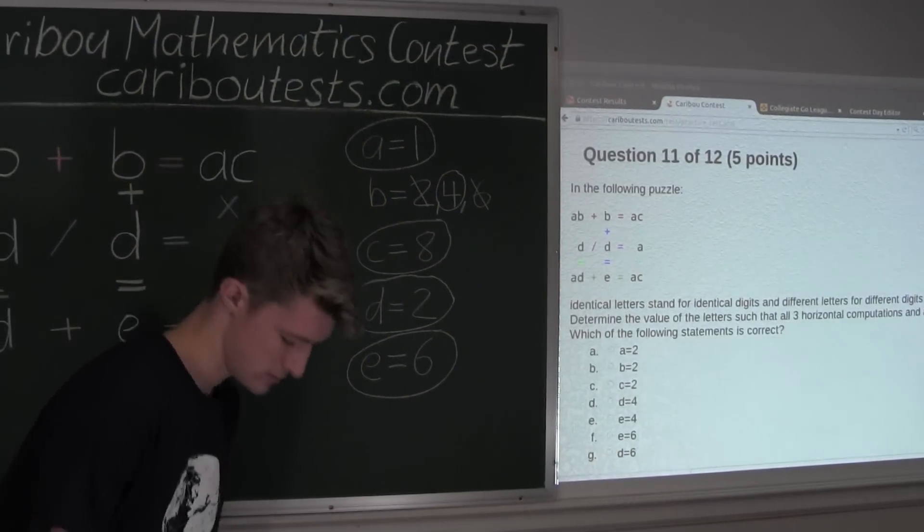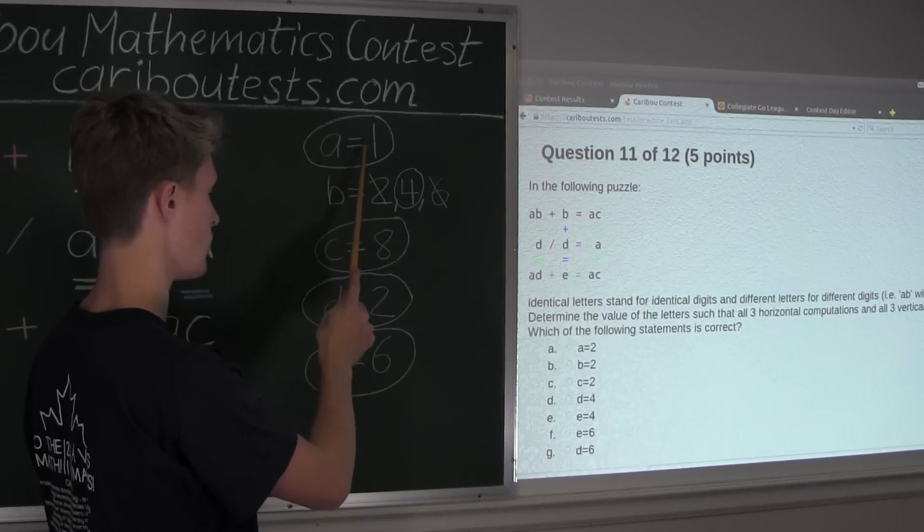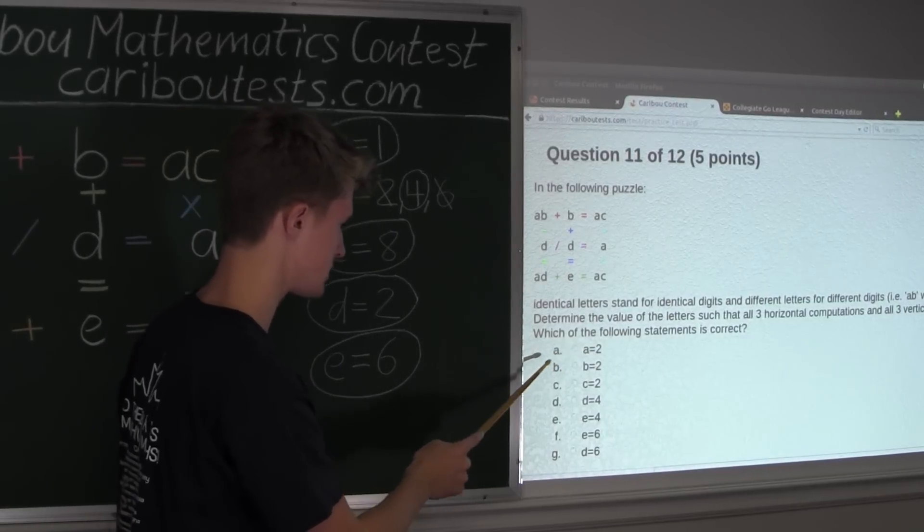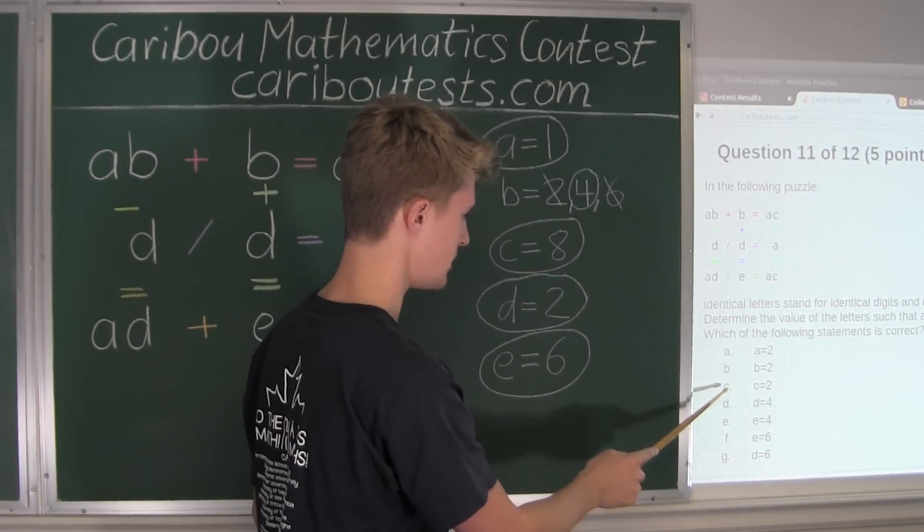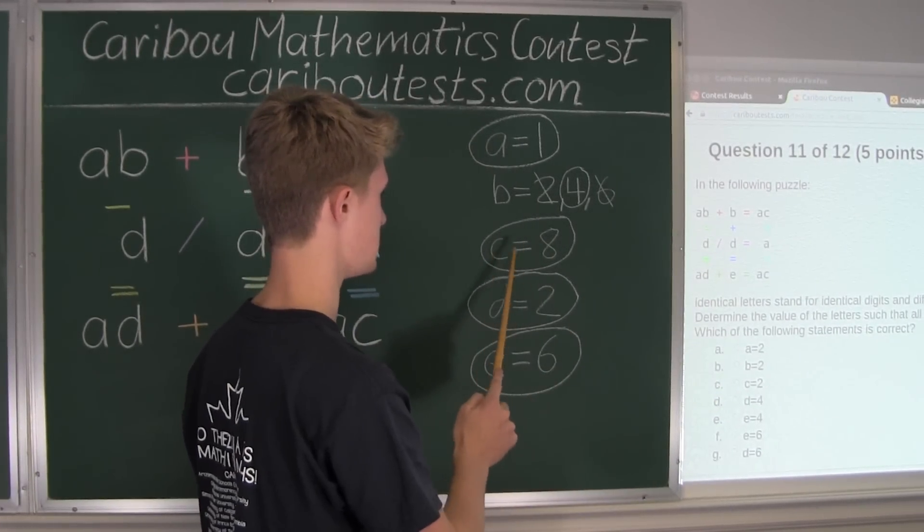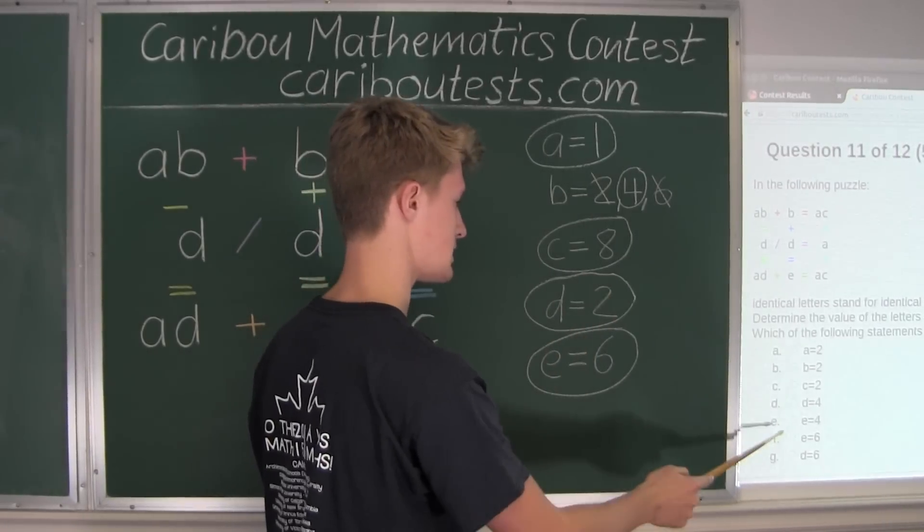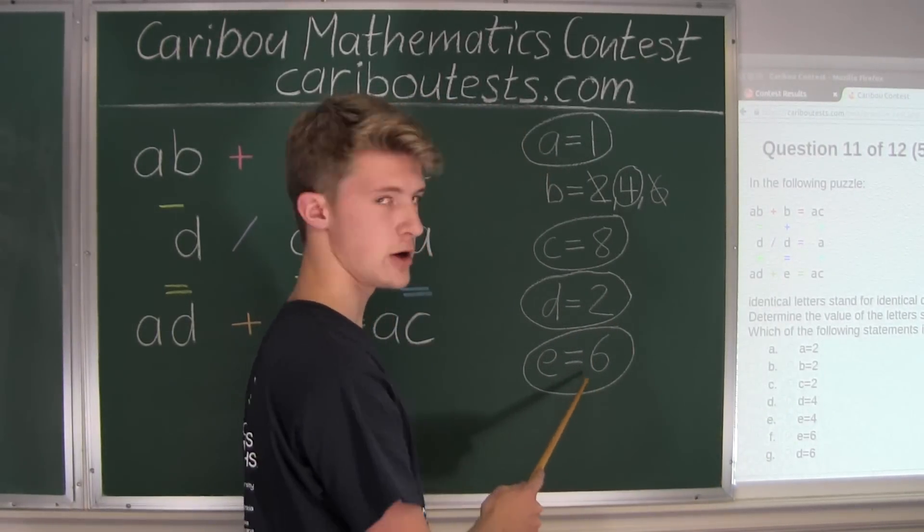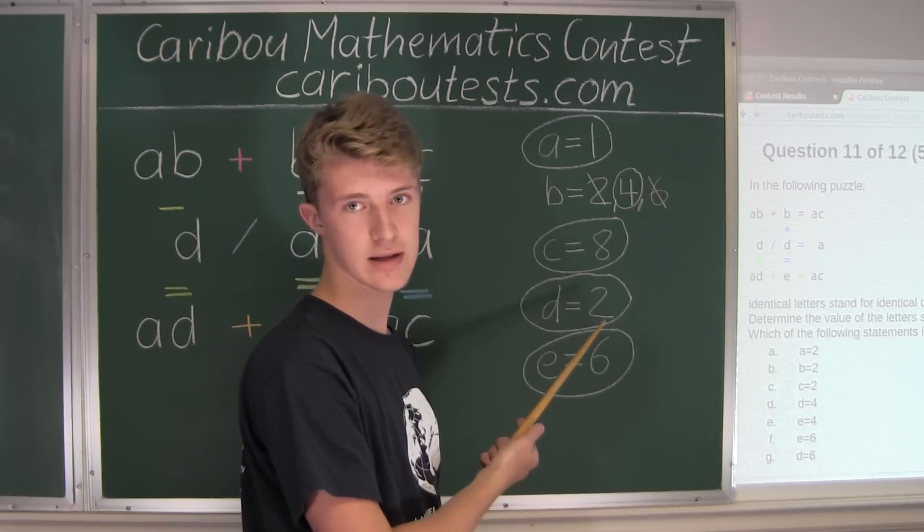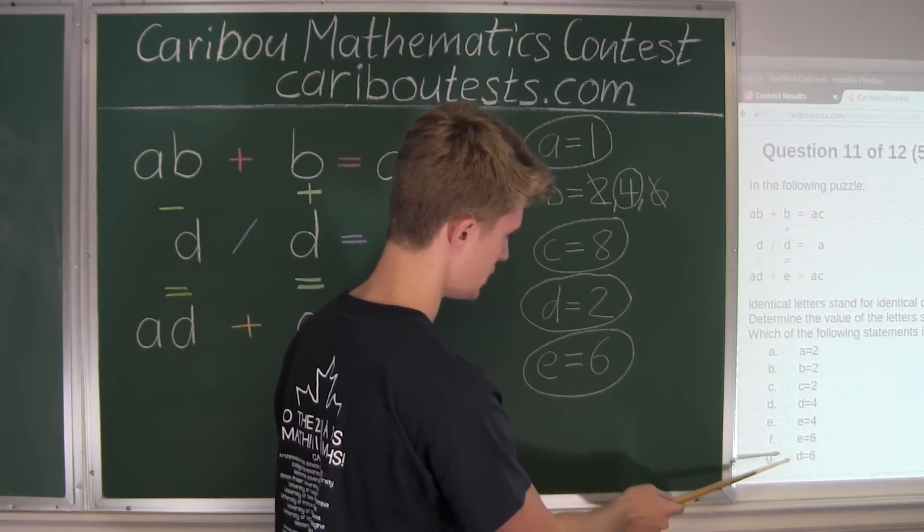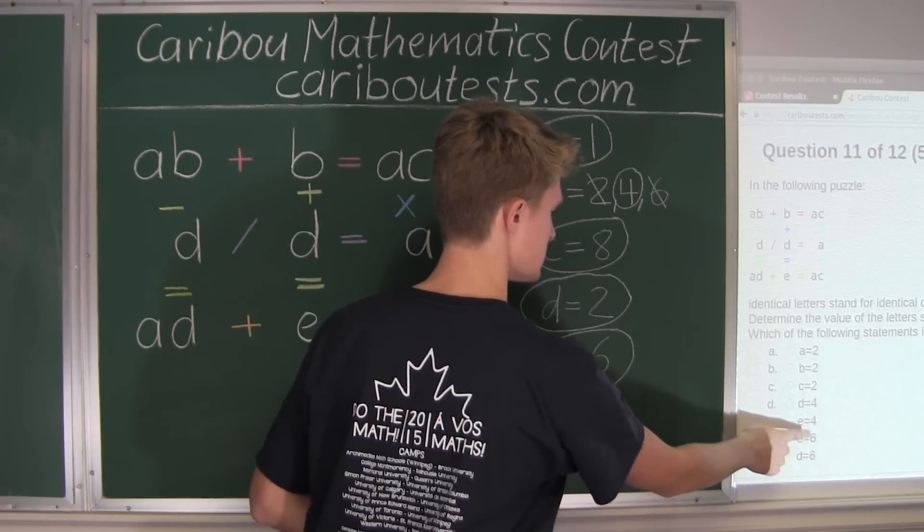So our first option is A equals to 2. That's wrong because we know A is 1. So that's false. B, B equals to 2. No, we know B is 4, so that's also false. C, C equals to 2. Again, that's false because C is equal to 8. D, D equals to 4. Well, we know D is 2, so that's wrong also. E, E equals to 4. No, E is 6, so again, that's wrong too. Then option F, E equals to 6. Well, we know that's correct. And finally, option G, D equals to 6. No, D is 2. Therefore, we know that option F is correct because it says E equals to 6.